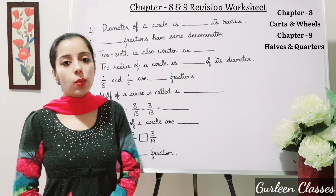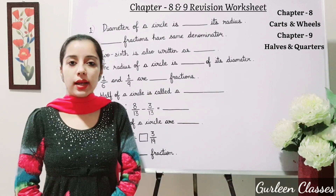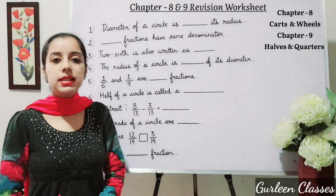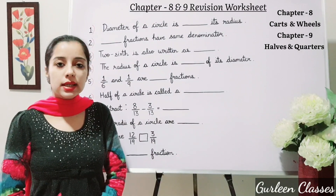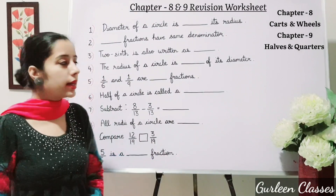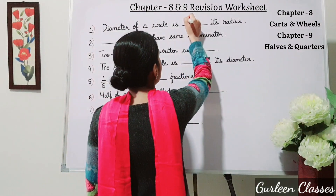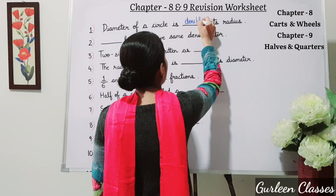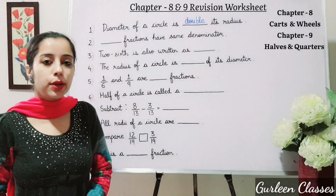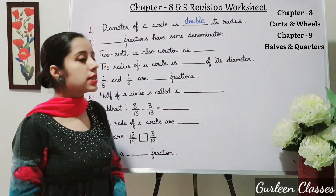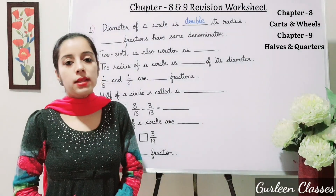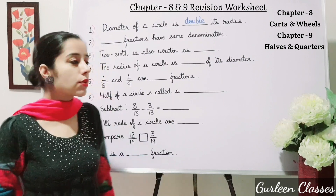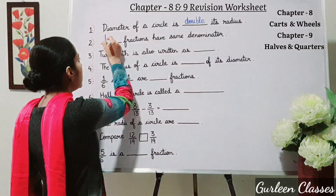Question number one, fill in the blanks. First part: diameter of a circle is dash its radius. Diameter of a circle is double its radius — so write here 'double'. Number two: dash fractions have the same denominator. Students, which fractions have the same denominator? Like fractions — write here 'like'.